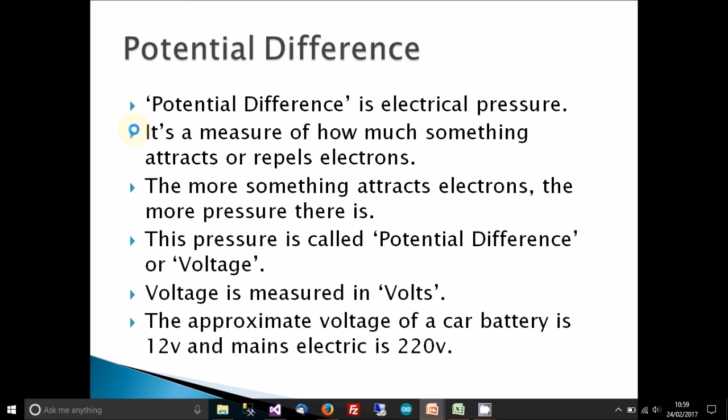So just as an example, the approximate voltage of a car battery is 12 volts, and mains electric is around 220, 230, or up to 250 in the UK. In America, I believe it's about 110 volts. So this is how much electrical pressure there is to force electrons down a conductor.